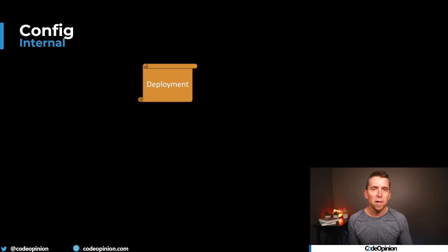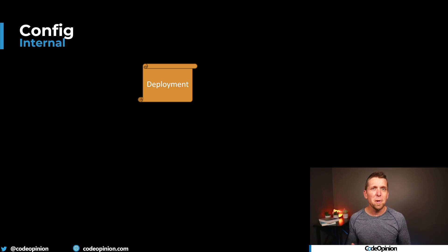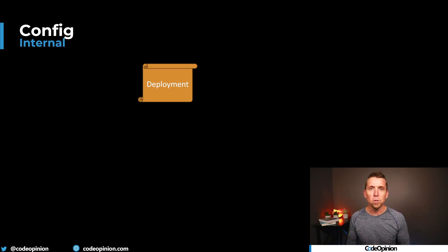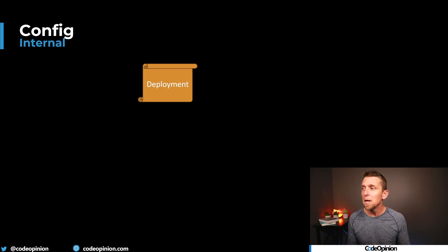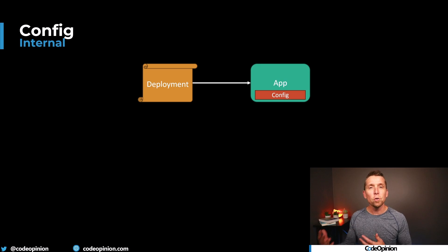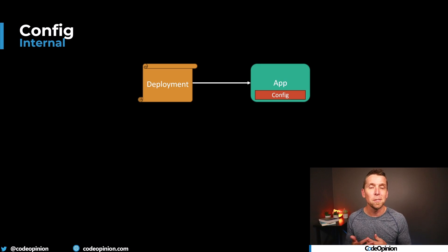It's typical to include your configuration with your actual deployment artifact. When you go through your deployment process, whether your configuration is physically in code — compiled or not — or if it's a separate JSON file that lives with your code that at startup it reads, this is pretty typical of having your deployment pipeline and configuration with your application as it's deployed.